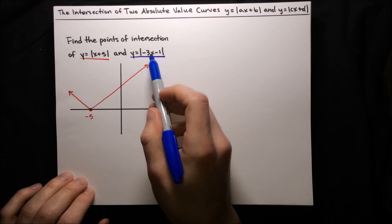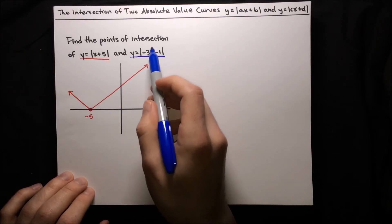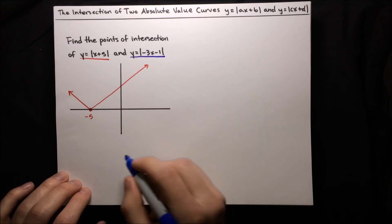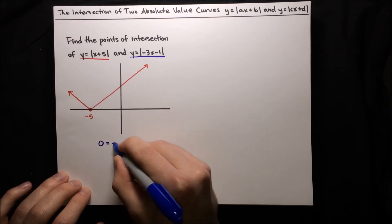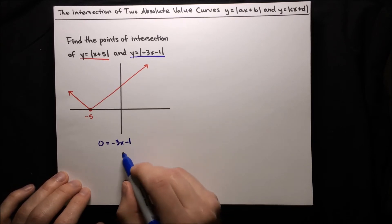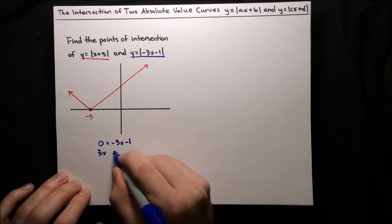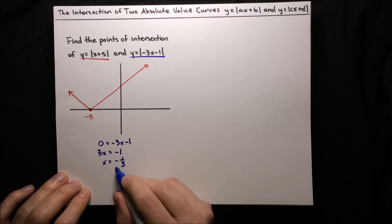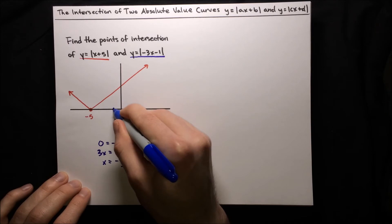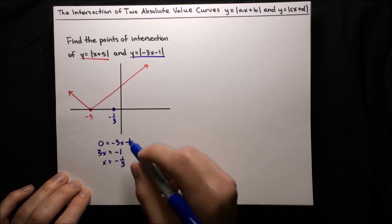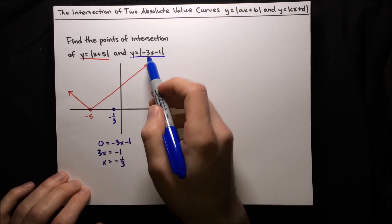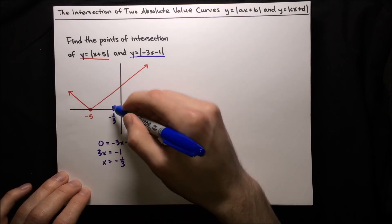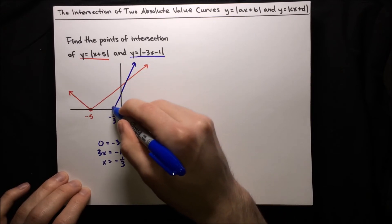The easiest way to figure out where the bottom of this v should go is to set the inside equal to 0 to solve for the x-intercept. We set 0 equals negative 3x minus 1, add 3x to both sides to get 3x equals negative 1, then divide by 3 to get x equals negative 1 third. So there's our x-intercept — plot it around there at negative 1 third. Now when we draw the v, this negative 3x makes the slope a lot steeper than the previous v which had slope 1, so we angle it upward more steeply.